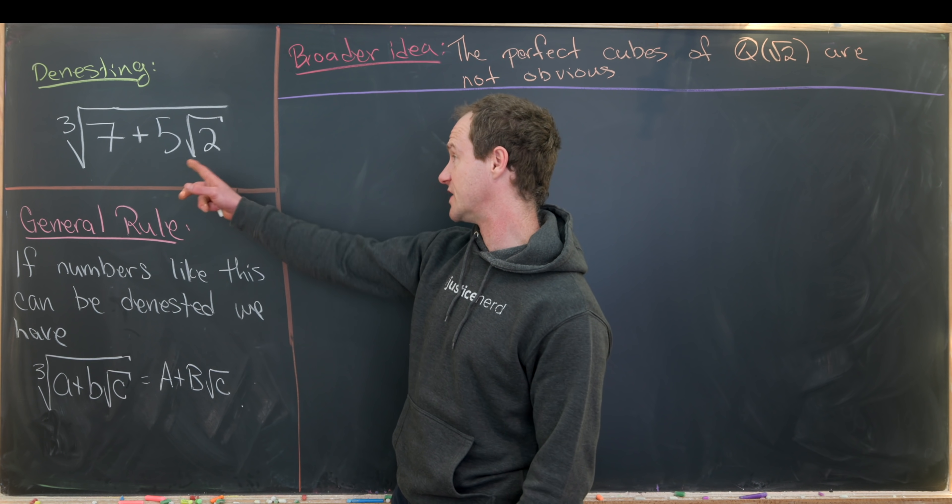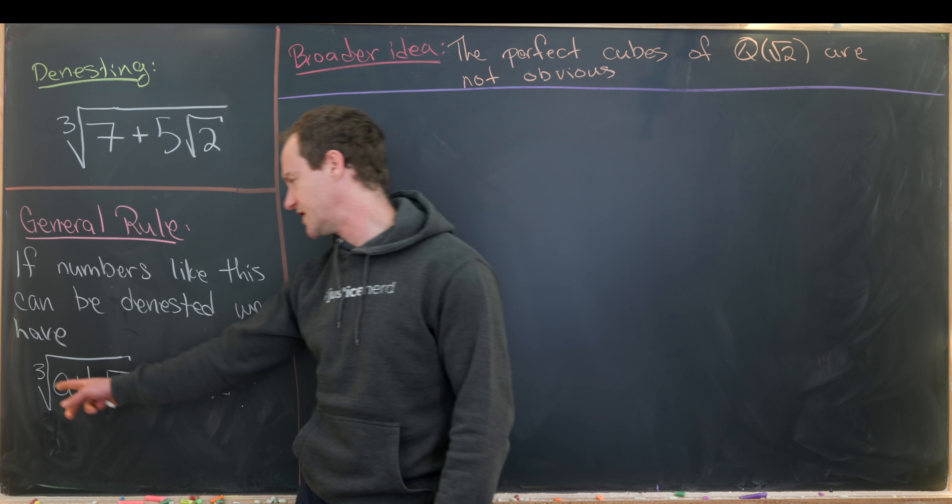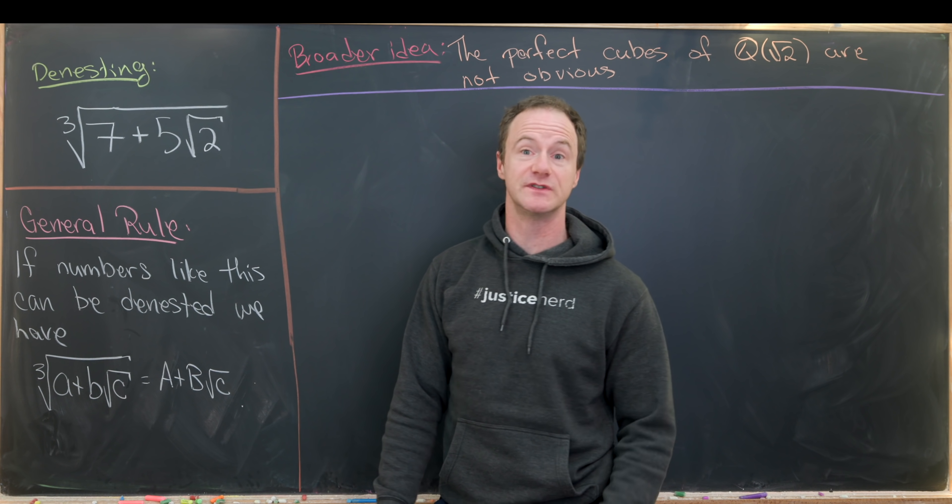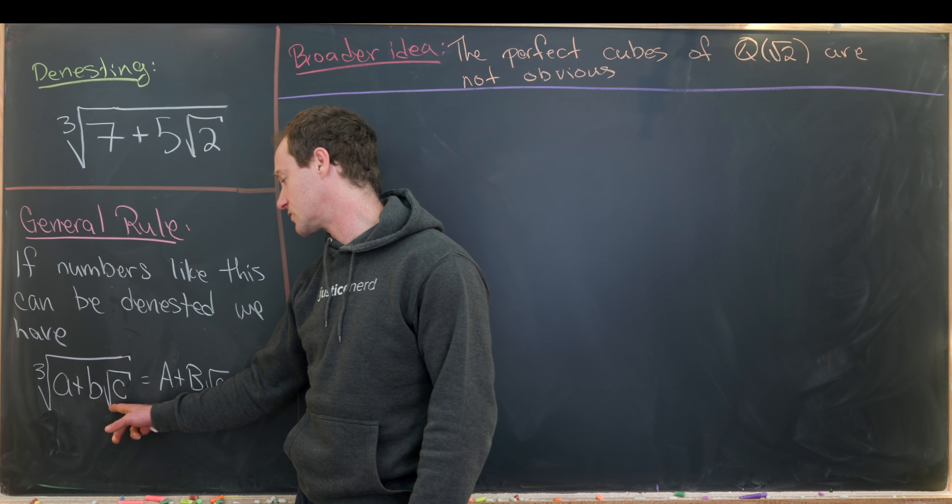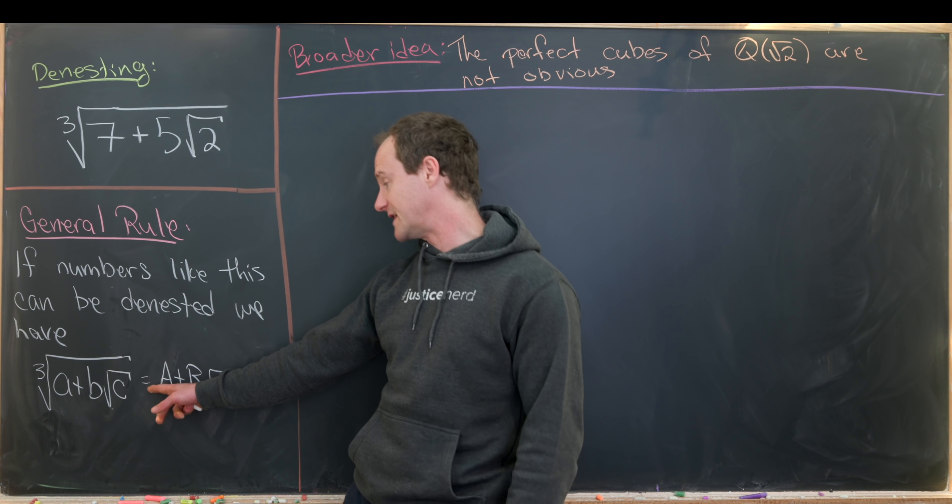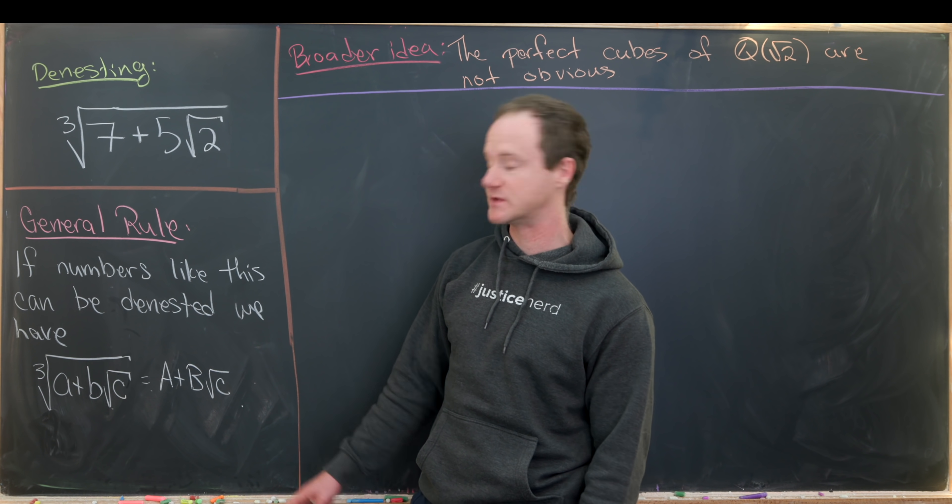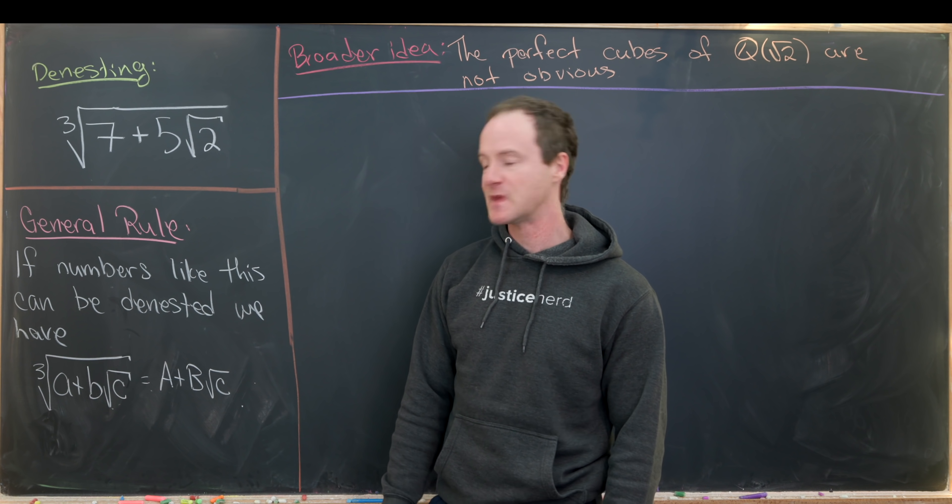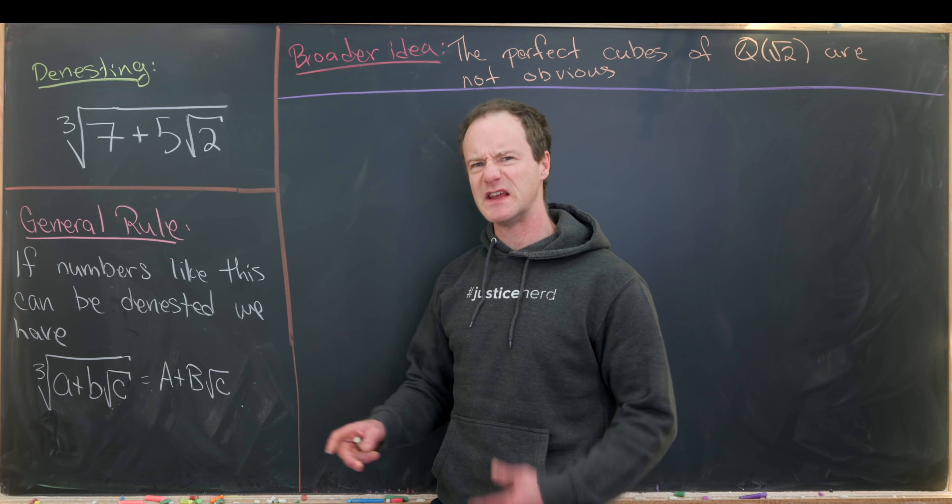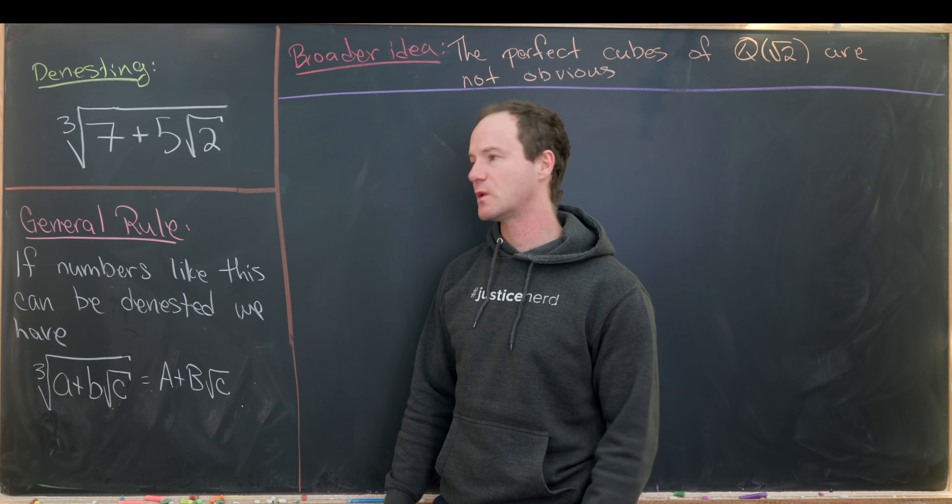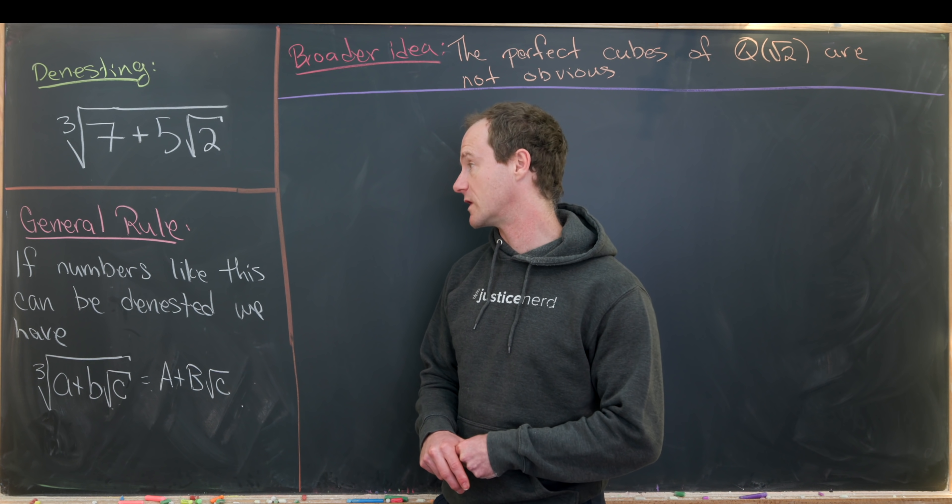So here I've kind of exchanged my special numbers for more general numbers and you could exchange these roots for more general roots if you wanted to. So here we have the cube root of a plus b square root c. Hopefully denests like capital A plus B square root c where these are the same c's. And this is of course where A and B are rational numbers. If they denest as irrational numbers well maybe that would be interesting but it wouldn't be quite the beautiful result that we're looking for.